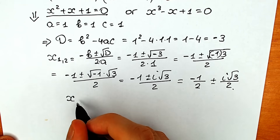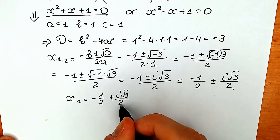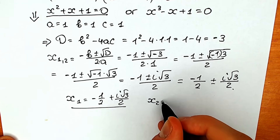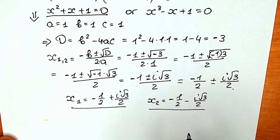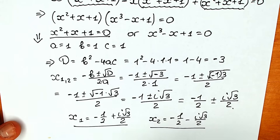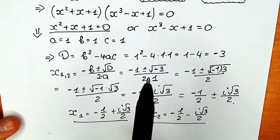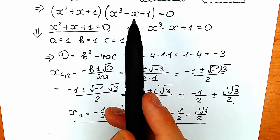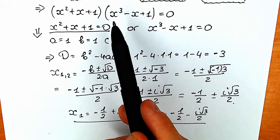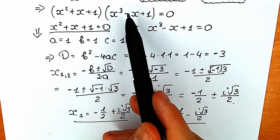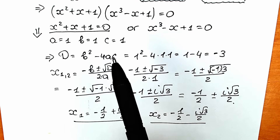So x first equals minus one half plus i square root of three over two, and x second equals minus one half minus i square root of three over two — these are our two complex roots. But don't forget about the second parenthesis: we still have the cubic equation x cube minus x plus one equal to zero, which hides three more roots according to the fundamental theorem of algebra.